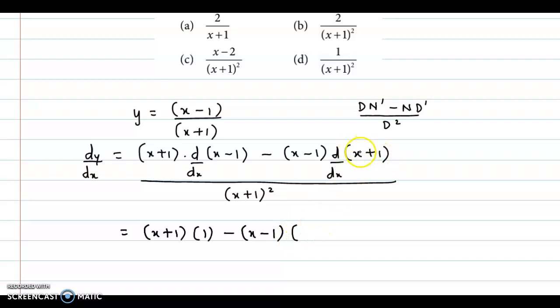these 2 terms' derivative: x's derivative is 1 and 1's is 0, so we close the bracket, upon x plus 1 the whole square.